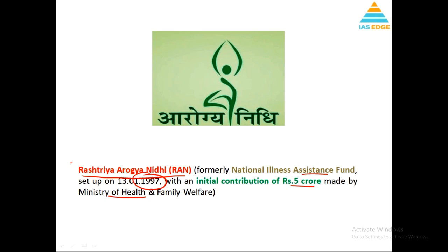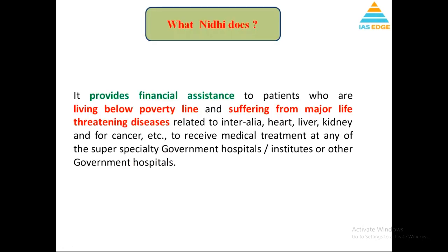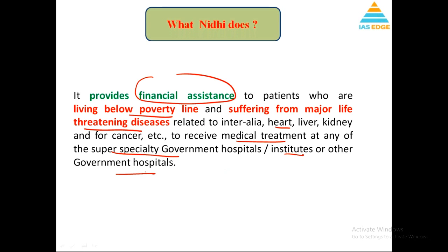The major objective of Rashtriya Arogya Nidhi is to provide financial assistance to people who are below the poverty line suffering from major life-threatening diseases like kidney disease, heart disease, or cancer. The government will provide medical treatment at any super-specialty government hospitals or institutes. So the focus is on financial assistance for BPL individuals with life-threatening diseases, treated at government hospitals.